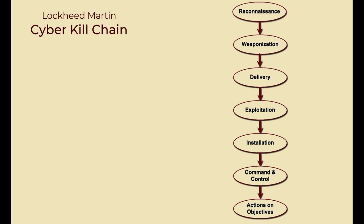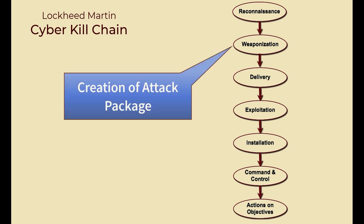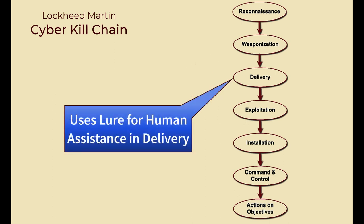The kill chain offers the steps typically taken by a threat actor when attempting to compromise a system. For now, I'll focus on the process leading to installation. Once a threat actor, or TA, completes a reconnaissance to identify possible attack opportunities, she creates an attack package designed to take advantage of known or perceived system vulnerabilities. She then configures a lure designed to trick a user into doing what is needed to install the attack package.